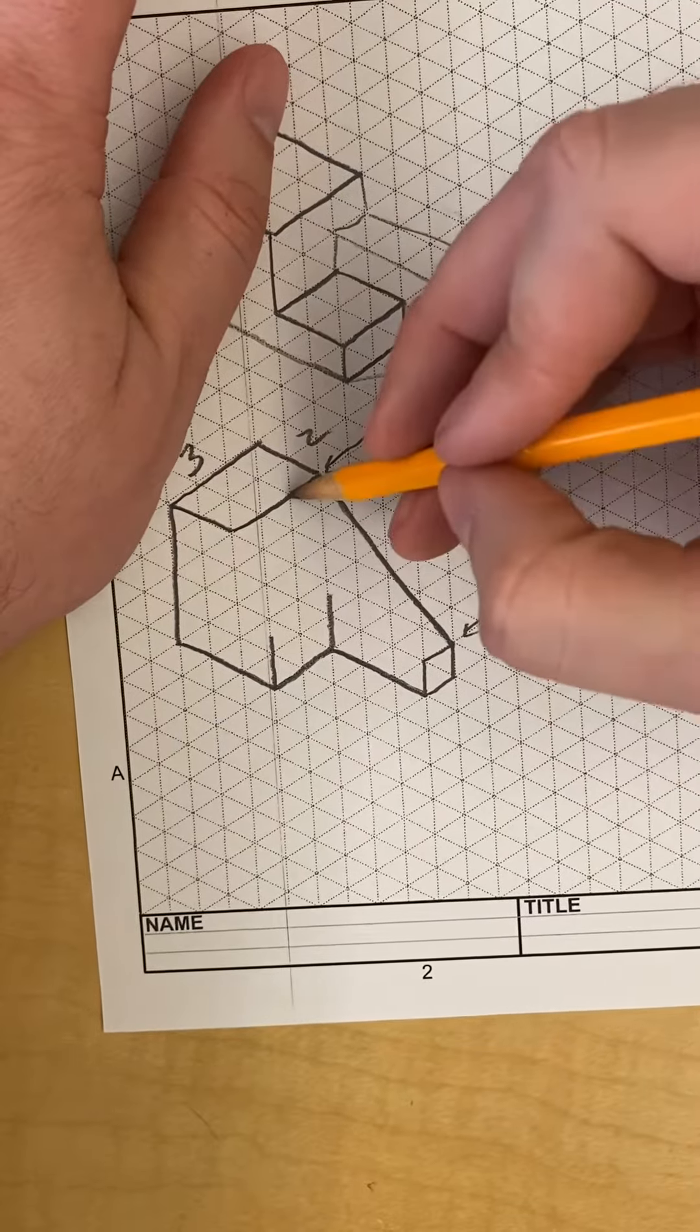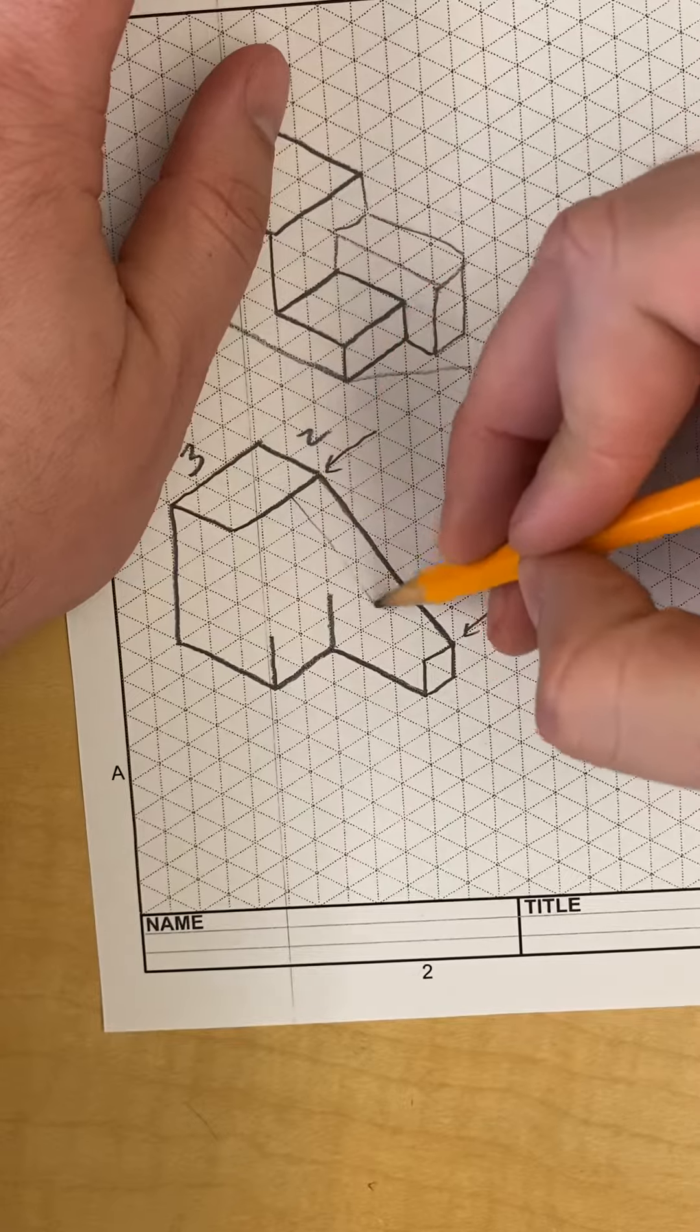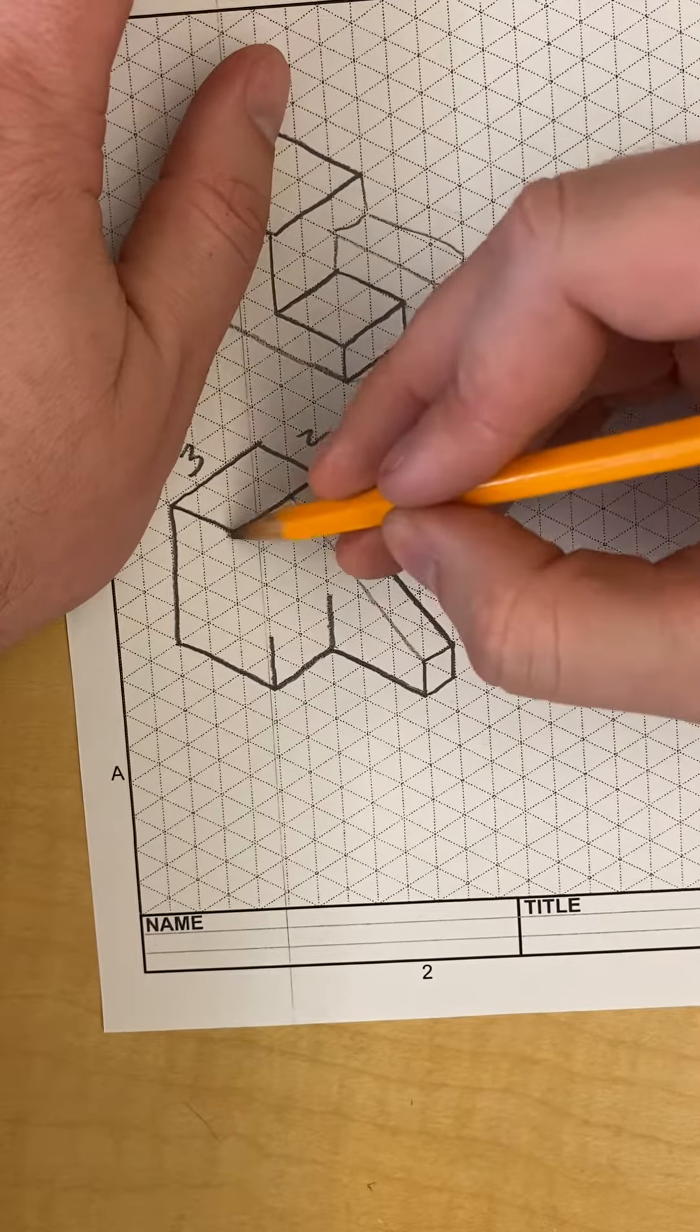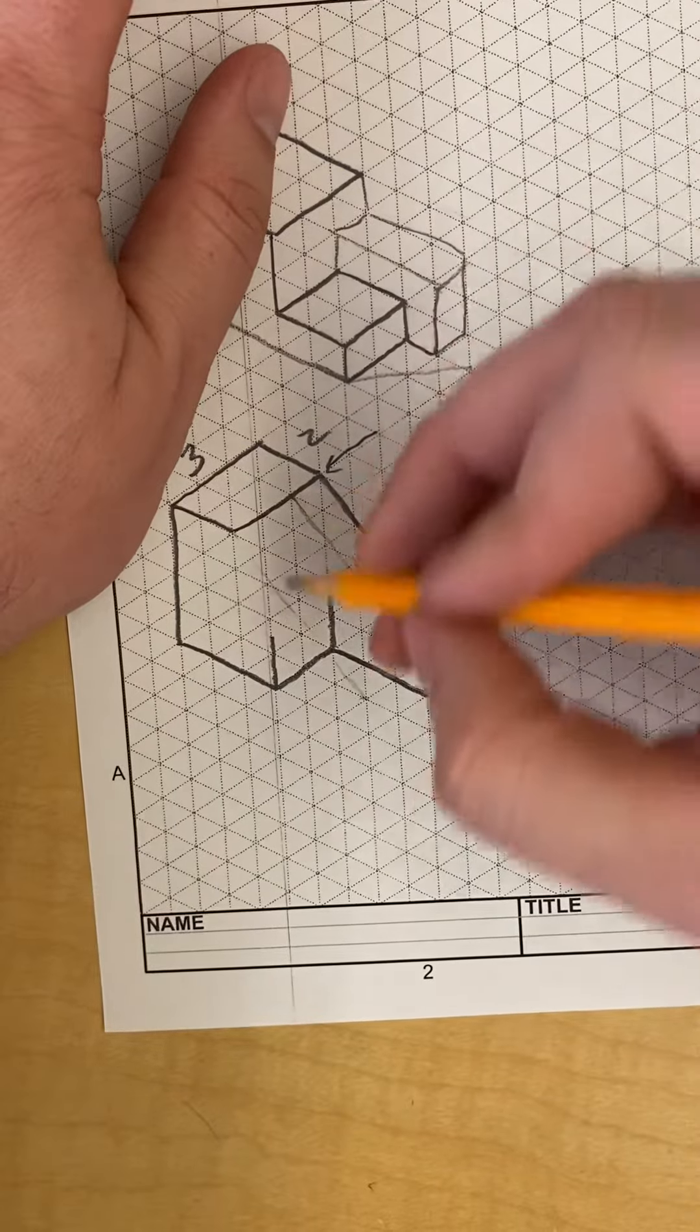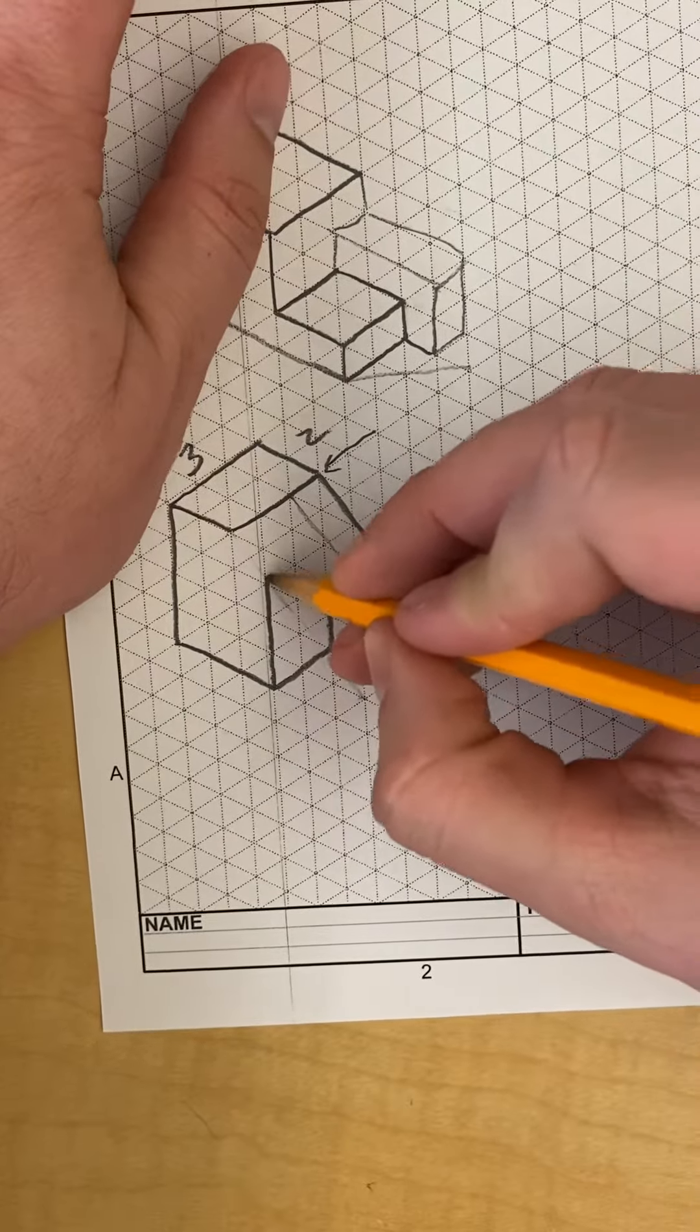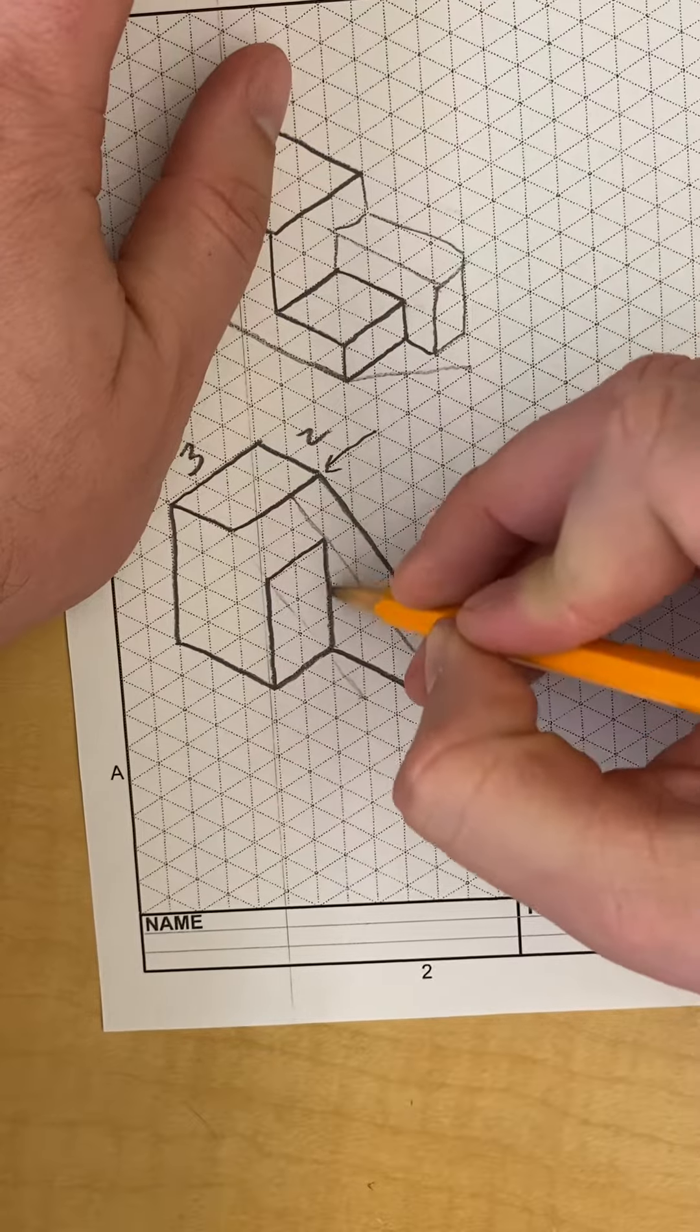Then I can do the same thing. I move over one and I can draw a diagonal line here. Move over two and I can draw those diagonal lines. Then this tells me how high this goes here, and here, and here.